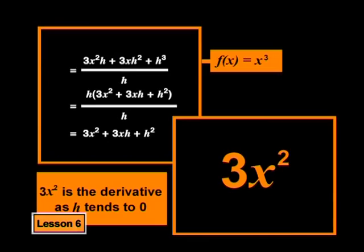Let's quickly look at the other derivative we determined. In this case, the function is f of x equals x cubed. And the gradient of the line between x, f of x, and x plus h, f of x plus h is 3x squared plus 3xh plus h squared. When h is very small, this gets very close to 3x squared, which is the derivative.